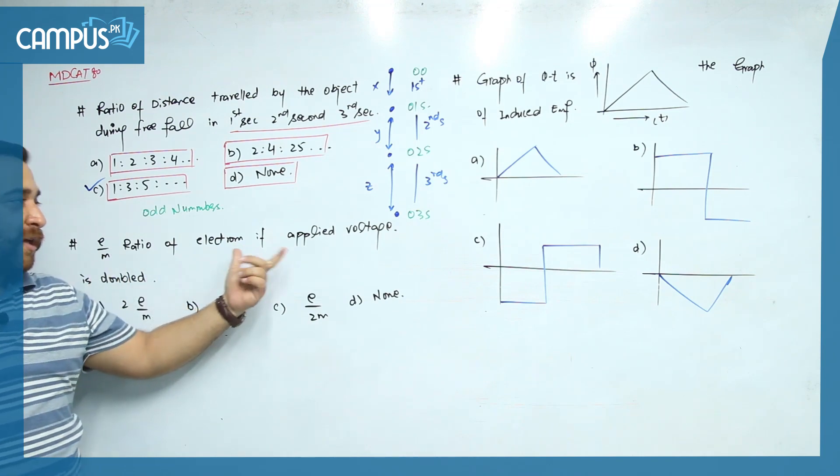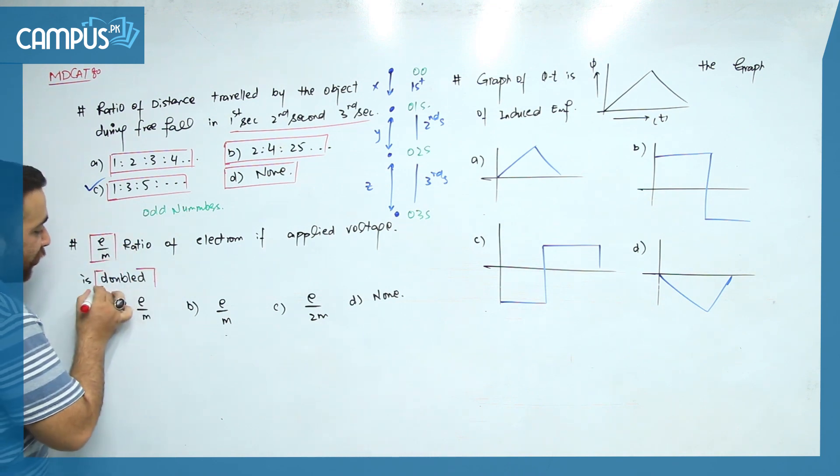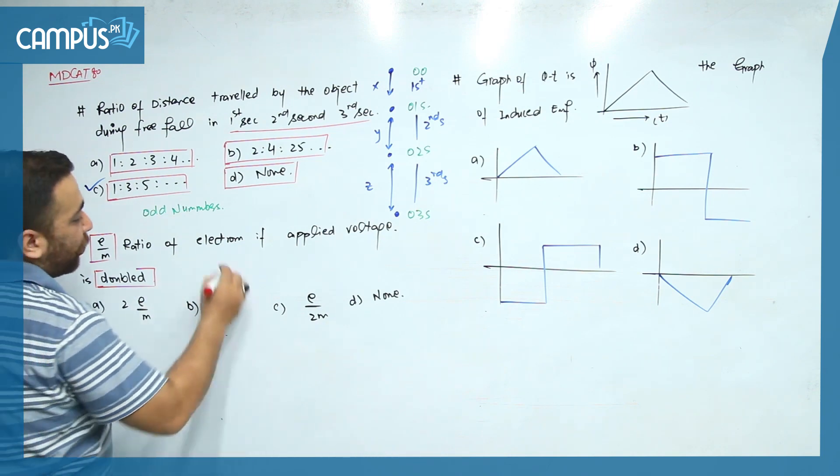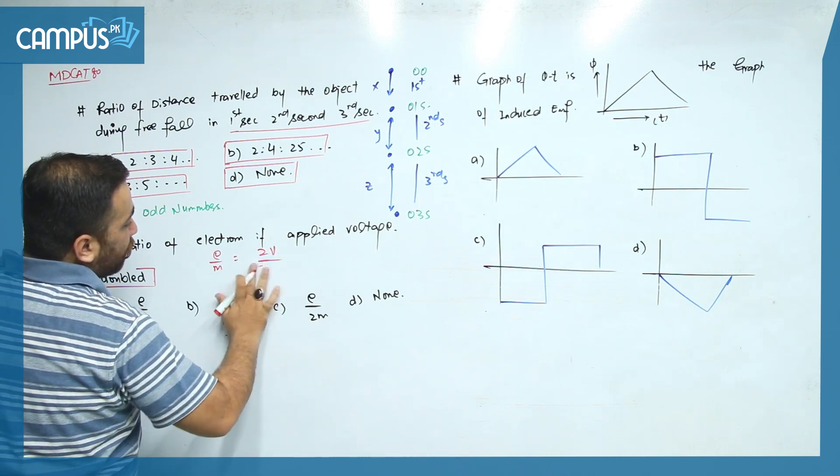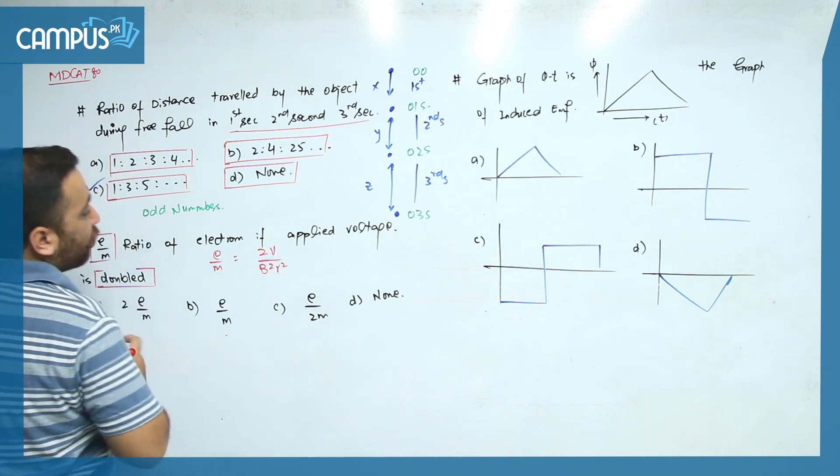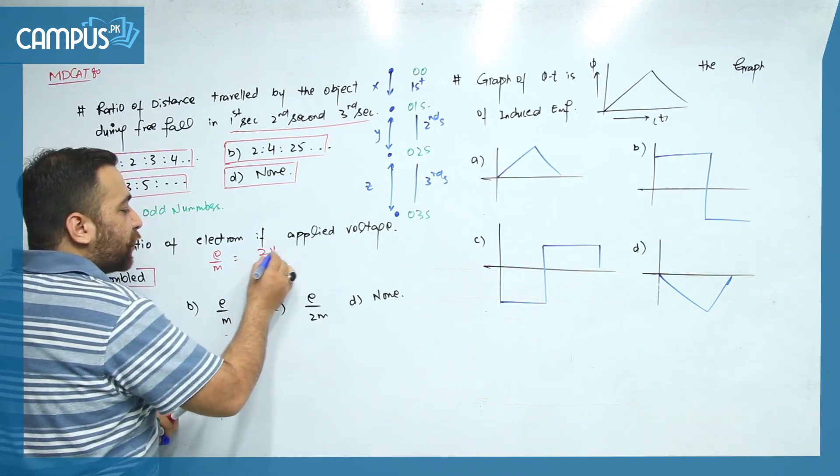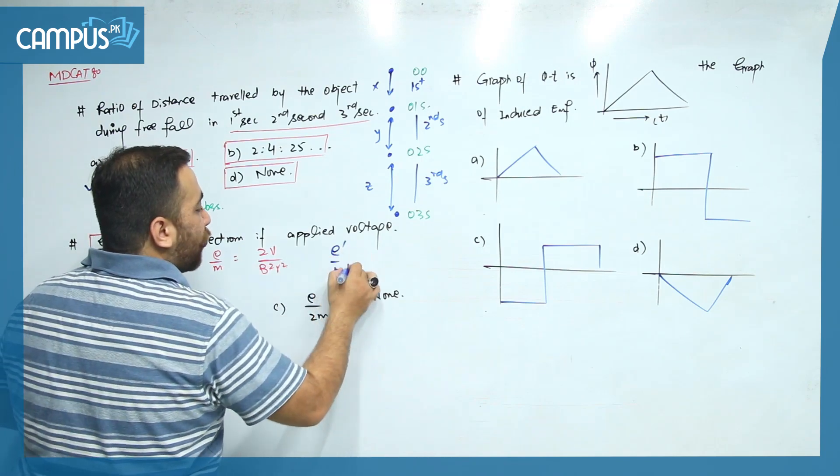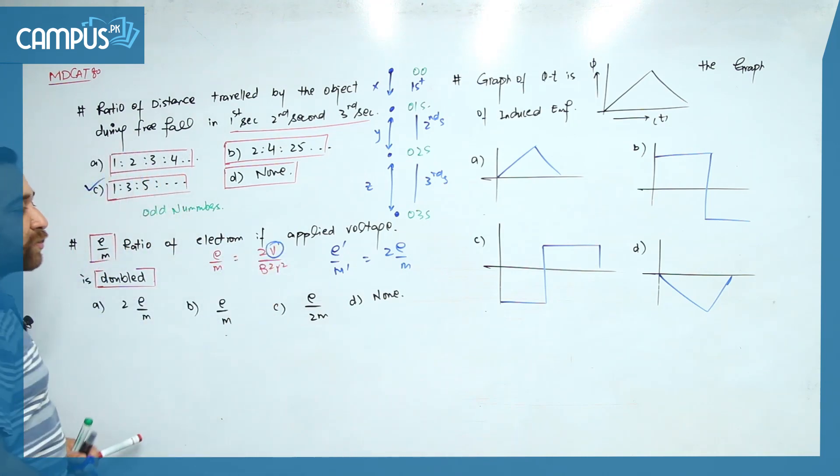The e/m ratio of electron is the second related question. The e/m ratio of an electron, if applied voltage is doubled - electron's e/m ratio is the keyword. What is e/m ratio if voltage doubles? We read the e/m ratio formula: e/m is equal to 2V over B squared R squared. If you look at the formula, it seems that if voltage doubles, the e/m ratio should also double. But this is wrong.